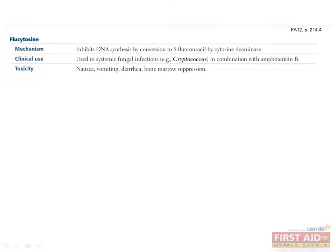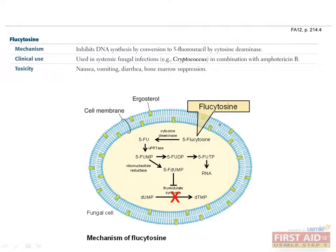Flucytosine is frequently used with amphotericin B in systemic fungal infections. Flucytosine penetrates fungal cell walls, where it is deaminated by fungal cytosine deaminase to 5-fluorouracil. Mammalian cells do not convert it to 5-fluorouracil. It competes with uracil, disrupting both RNA and protein synthesis. It may also be converted to 5-fluorodeoxyuridylic acid, which inhibits thymidylate synthetase and disrupts DNA synthesis. Therefore, flucytosine inhibits DNA synthesis by conversion to 5-fluorouracil by cytosine deaminase.